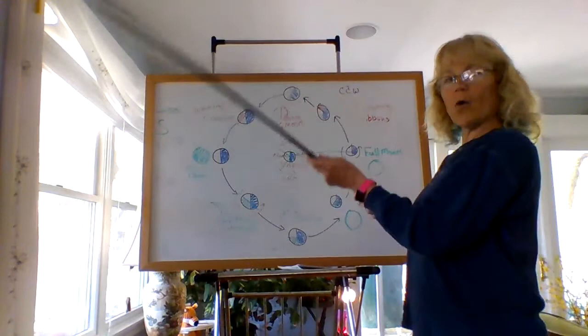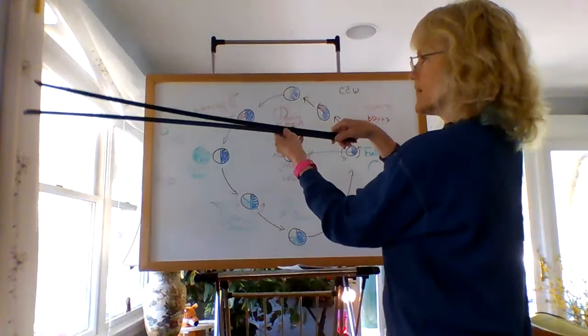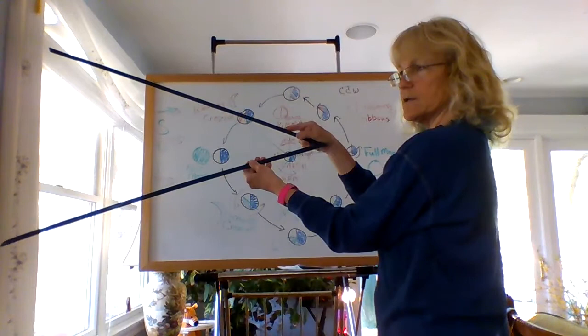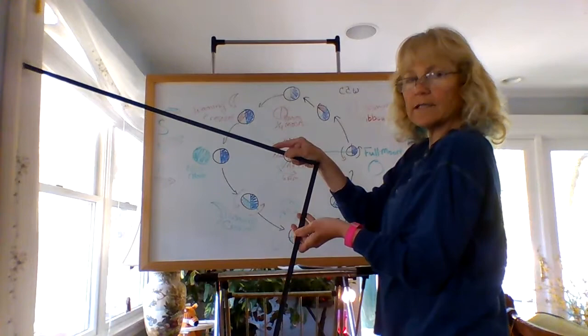If I am looking counterclockwise, meaning I'm on the earth, I'm going to look to my waxing crescent at an angle of 45 degrees. I'm going to look at my first quarter at an angle of 90 degrees.